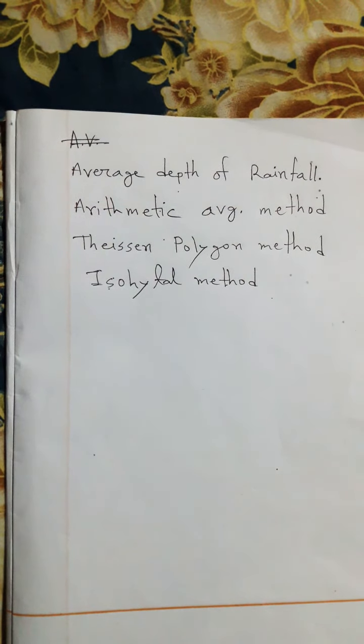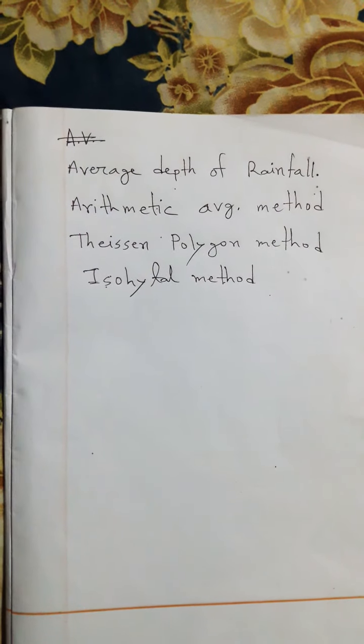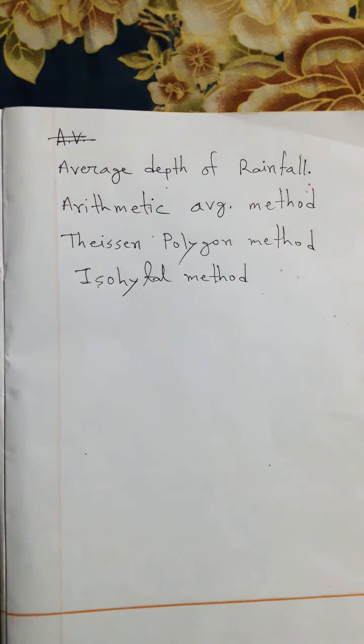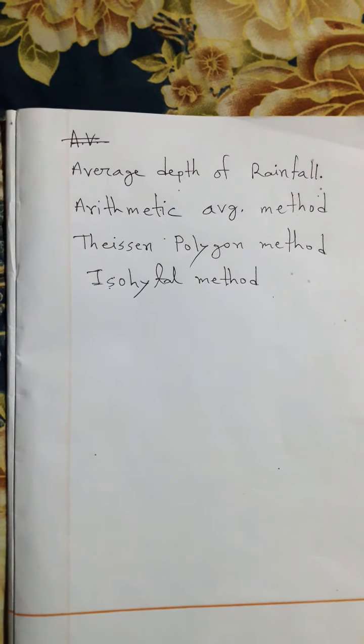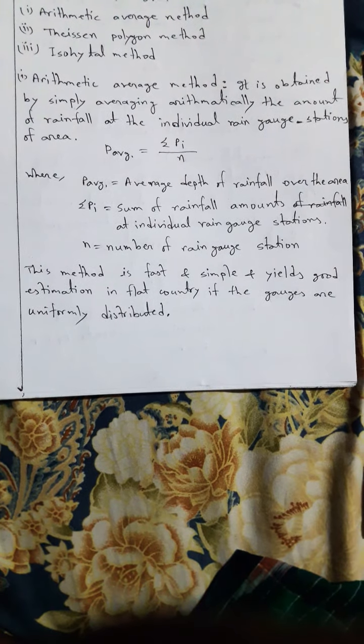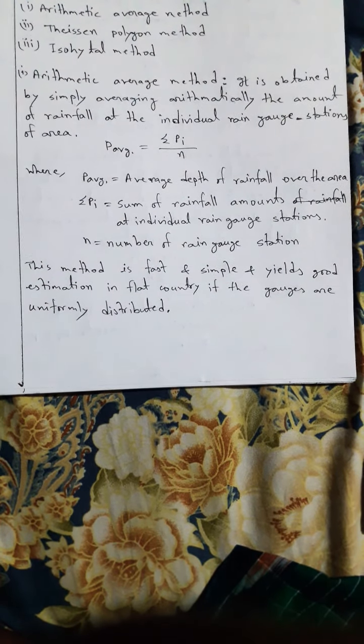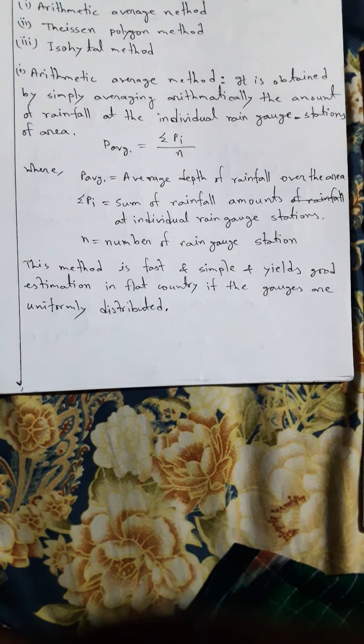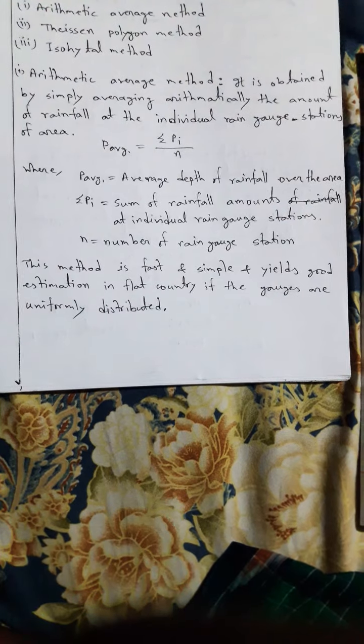Number one: Arithmetic average method. Thiessen polygon method. And Isohyetal method. Arithmetic average method: it is obtained by simply averaging arithmetically the amount of rainfall at the individual rain gauge stations of the area.